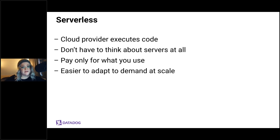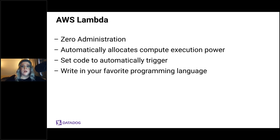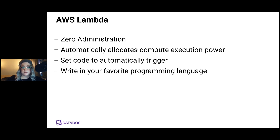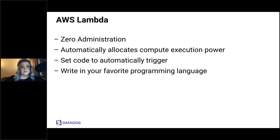Today we're specifically talking about AWS Lambda for our serverless functions. You can run code for virtually any type of application or backend service with zero administration. You just upload your code as a zip file or container image, and Lambda automatically allocates compute execution power and runs your code based on the incoming request. You can trigger from 140 AWS services and write Lambda functions in Node.js, Python, Go, Java, and more.